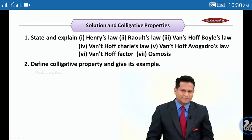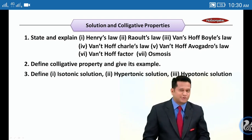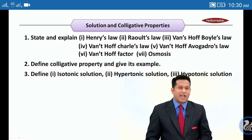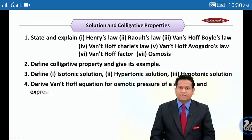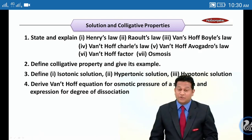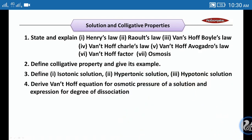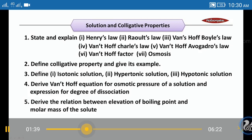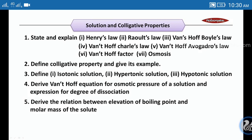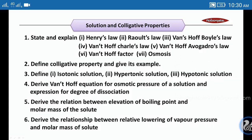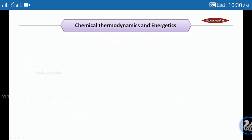Second: define colligative property and give its examples. Third: define isotonic solution, hypertonic solution, and hypotonic solution. Fourth: derive the van't Hoff equation for osmotic pressure of a solution and the expression for degree of dissociation. Fifth: derive the relation between elevation of boiling point and molar mass of solute. Last: derive the relation between relative lowering of vapor pressure and molar mass of solute.